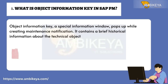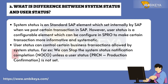Question number one: What is Object Information Key in SAP PM? The Object Information Key is a special information window that pops up while creating a maintenance notification. It contains brief historical information about the technical object.